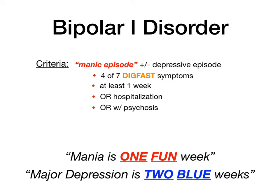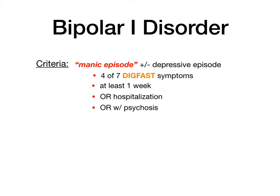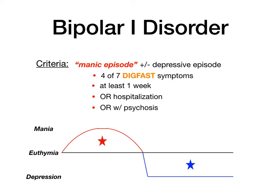Four of seven for at least one week is bipolar 1. Here's a graph illustrating what bipolar 1 disorder looks like clinically. Euthymia in the middle represents normal mood — not depressed, not manic. In the red phase of the graph the patient is manic, with a more expansive or irritable mood. In the blue phase the patient is depressed. This fluctuation between manic episodes and depressive episodes categorizes bipolar 1 disorder.